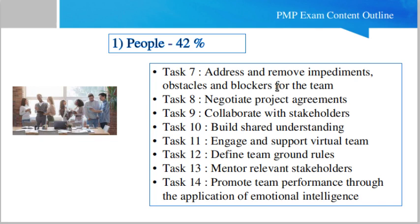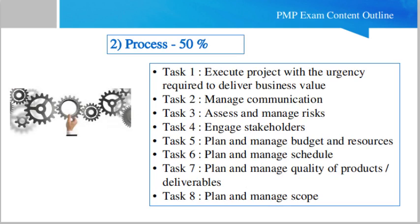Task 12: define team ground rules — that is, how they will act accordingly. Task 13: mentor relevant stakeholders wherever they need mentoring. Task 14: promote team performance through the application of emotional intelligence, which means using your emotions intelligently so they are helpful to you. The next domain is Process, which makes up 50 percent of the exam.